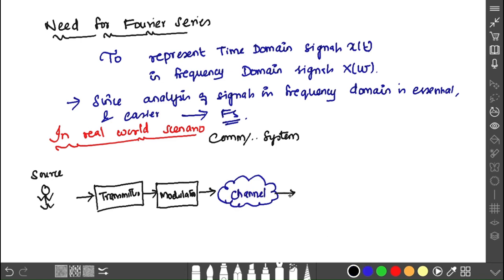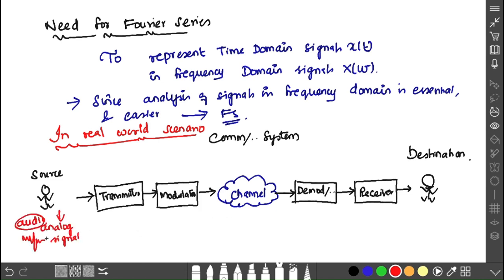Concentrating on frequency domain is the concept of Fourier series. In a real-world scenario, consider a communication system from source to destination. I am speaking here—this is an audible or voice signal.